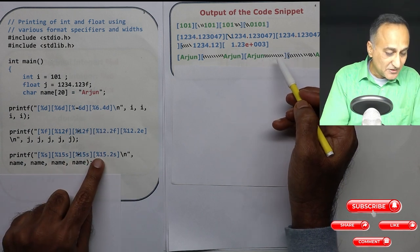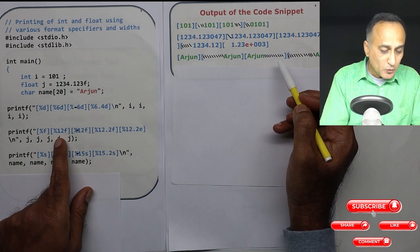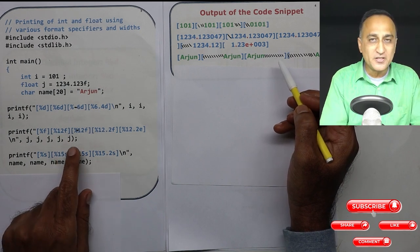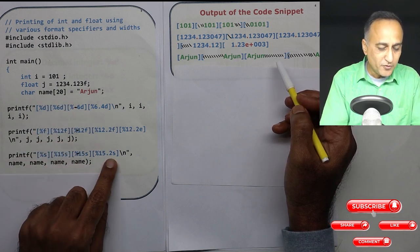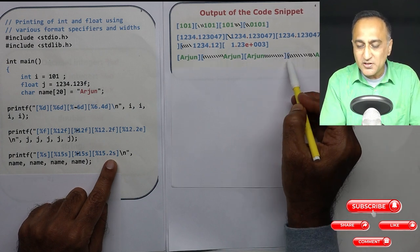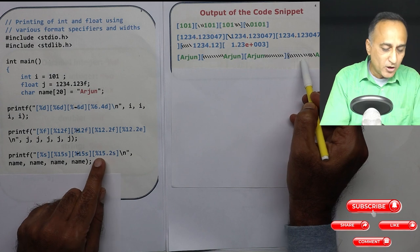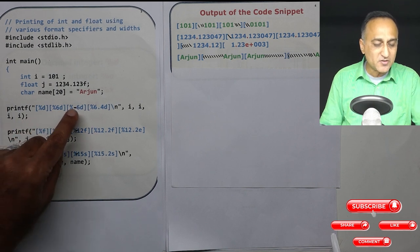Now if I say %15.2s see what happens. This point 2 and all have meaning with floating point number, they don't have meaning with integers and characters or names like this. So if you put 15.2 it will only print AR at the end and all the 13 characters at the beginning will be padded with spaces. So I would suggest take this program, run and play around with it by trying to change the width, trying to change the sign and see what all happens.